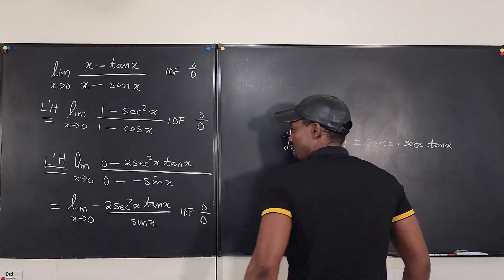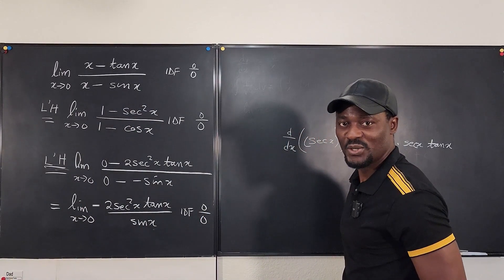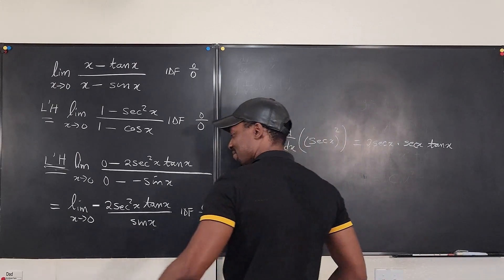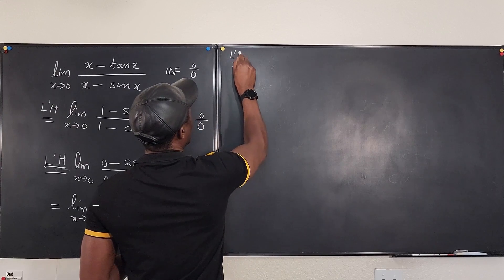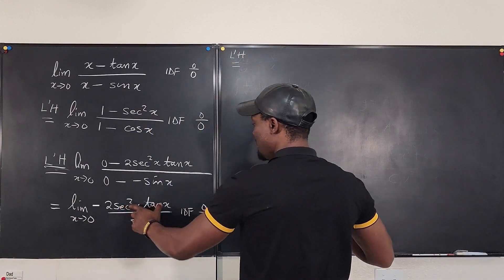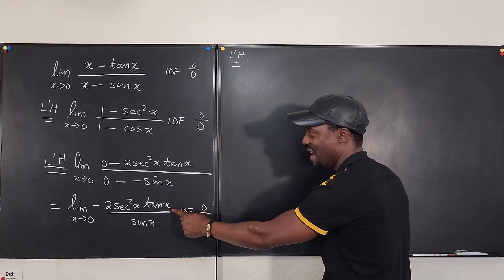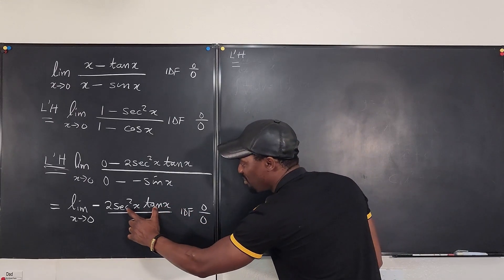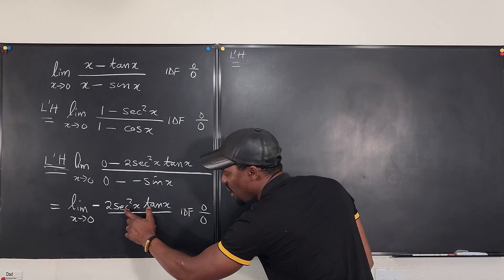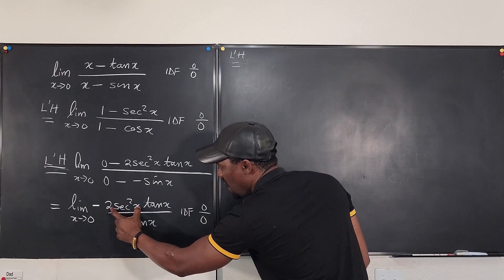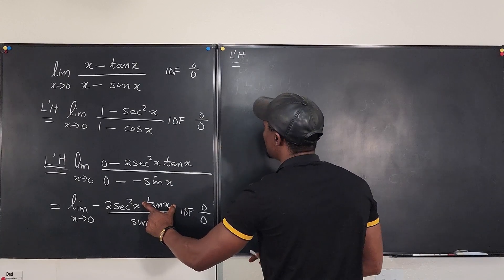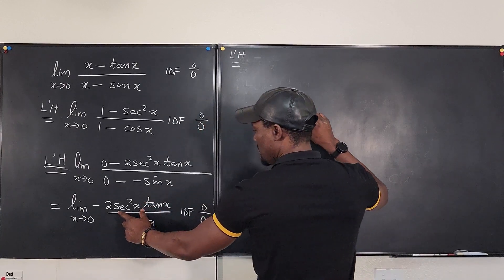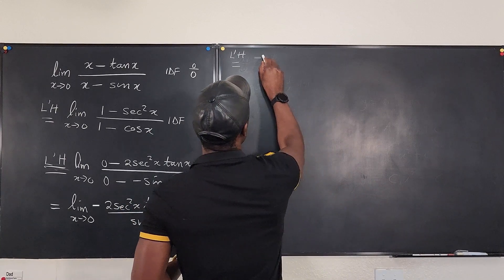So, L'Hopital's rule again. Let's do it. So if we apply L'Hopital's rule to this one more time, what do we have? We take the derivative of the top and this is where it gets very crazy because you have a product of two trig functions, one requiring the chain rule and the other one just straight up differentiation. So let's see what that's going to look like. So if we apply L'Hopital's rule, we're going to have 2.